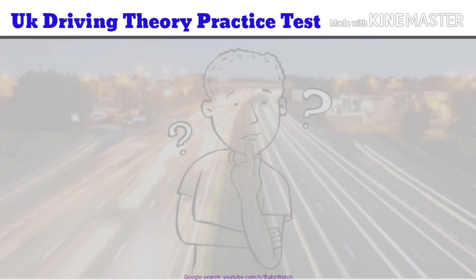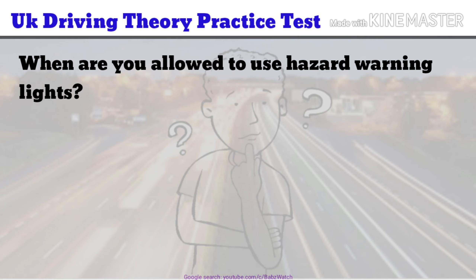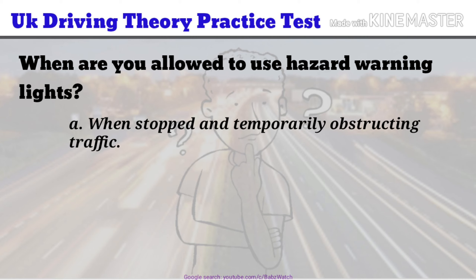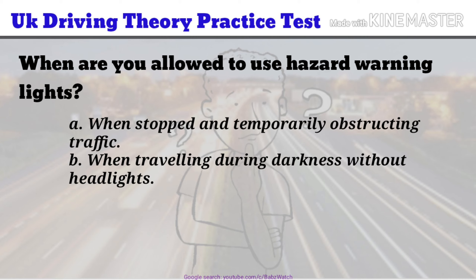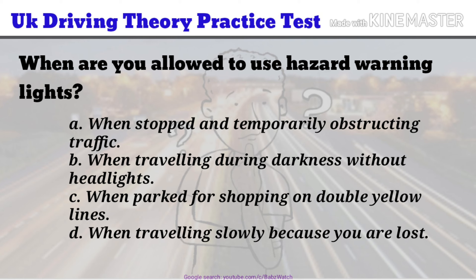UK Driving Theory Practice Test Question 1 of 50. When are you allowed to use hazard warning lights? a. When stopped and temporarily obstructing traffic. b. When travelling during darkness without headlights. c. When parked for shopping on double yellow lines. d. When travelling slowly because you're lost. The correct answer is d.